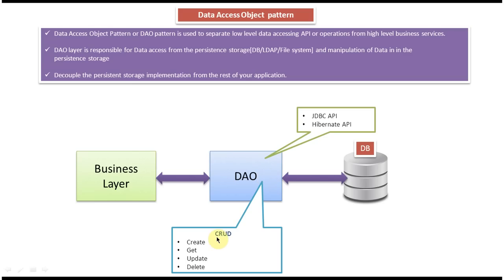The main use of this DAO layer is to perform CRUD operations. CRUD meaning Create, Retrieve, Update, and Delete. This layer is responsible for creating, getting, updating, or deleting records in the database table. To perform these CRUD operations, it will use low-level accessing APIs like JDBC API or Hibernate APIs. So this DAO layer will have methods to perform the CRUD operations.